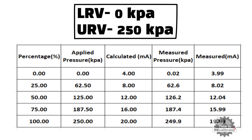Now apply 62.50 kPa pressure to the transmitter by using the pressure calibrator, and the transmitter display will show you the measured pressure value. The measured value should be near to 62 kPa. A plus or minus 5 kPa deviation from the standard value should be acceptable. Also note down the measured milliampere value which is measured by the digital voltmeter. The measured milliampere value should be near to 8 milliampere.